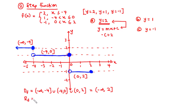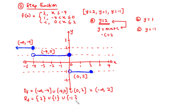Now for the range, considering each individual constant function: the first function has y value 2, a single element. The second function has y value 1, also a single element. The third has negative 1 as the only y value. Therefore, the range of this function is the set containing negative 1, 1, and 2. So these are the domain and range of this step function.